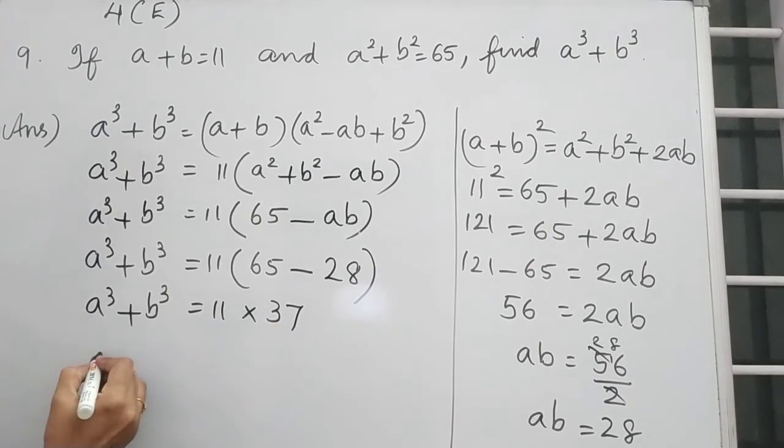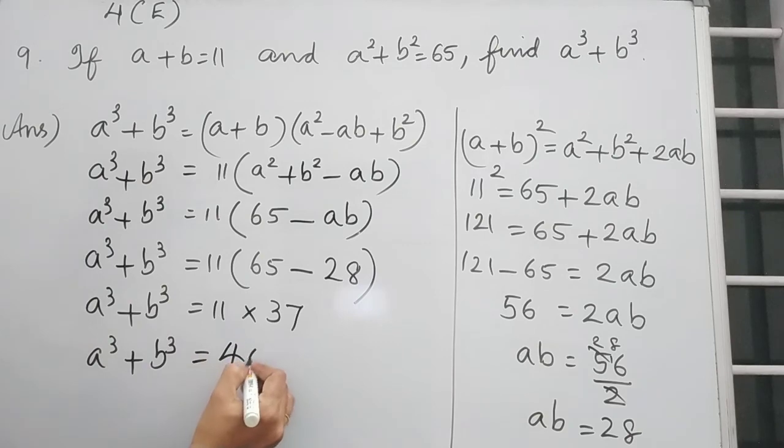So A cube plus B cube is equal to 11 into 37 is 407. So A cube plus B cube is equal to 407. Thank you.